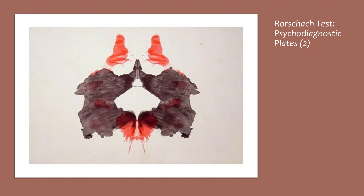Some interpretation manuals prescribe that the response 'animal face' suggests paranoia. The red details of card two are often seen as blood and are the most distinctive features. The responses to them can provide indications about how a subject is likely to manage feelings of anger or physical harm. This card can induce a variety of sexual responses as well. The most popular responses were two humans or a four-legged animal — nearly 50% focused on the gray aspects, often seeing a dog, elephant, or bear.